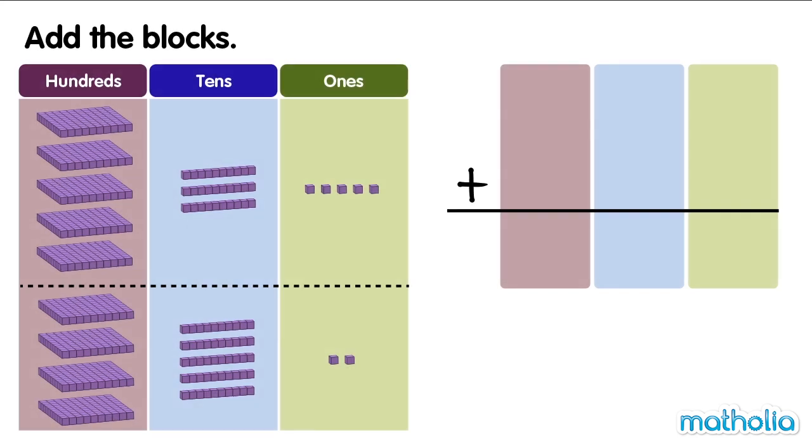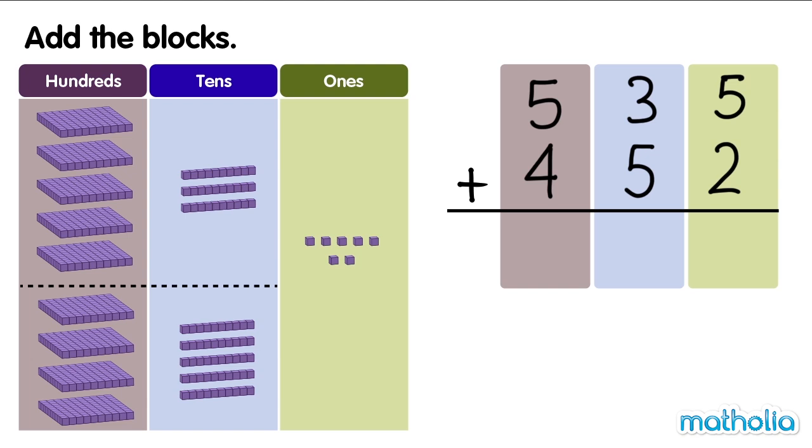Add the blocks. There are 535 blocks and there are 452 blocks. Let's start by adding the 1s. 5 1s plus 2 1s equals 7 1s.